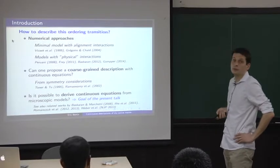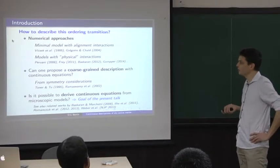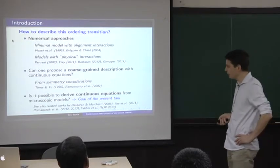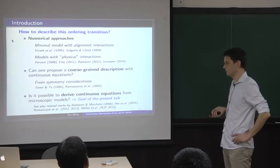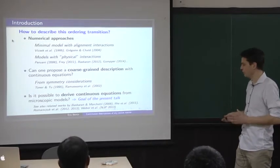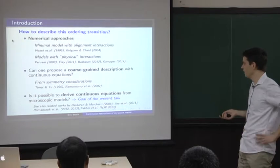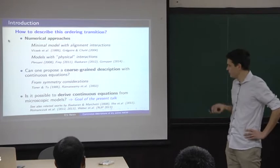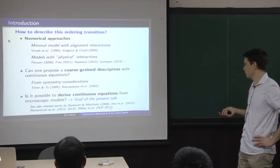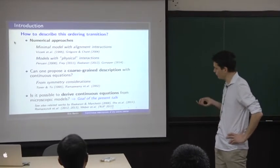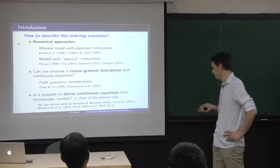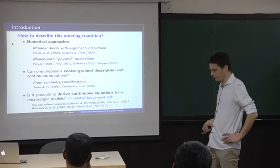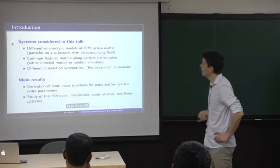If you don't want to have just phenomenological equations with unknown coefficients, you may want to start from some microscopic model and derive the continuous equations, so that you know the expressions of the coefficients and things are more controlled. This is the goal of the present talk, and this is what we did basically in this work. I also want to mention works by other groups, such as Baskaran and Marchetti, Thomas Hiller, Roman Shook and Szymenski-Geyer, Weber and Frey, etc.